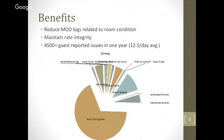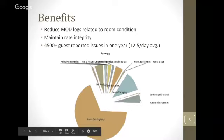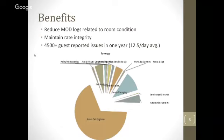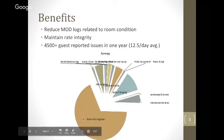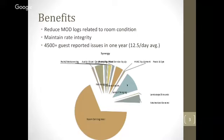We had 4,500 guest calls reported, averaging about 12 and a half per day. Breaking down the room call categories — the largest was lamp changing, followed by general maintenance. Our main goals were to reduce the primary calls coming in. I then gave a brief scope of work: here's what we're going to be cleaning and maintaining.